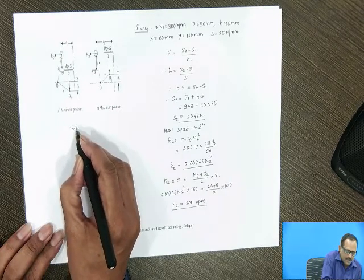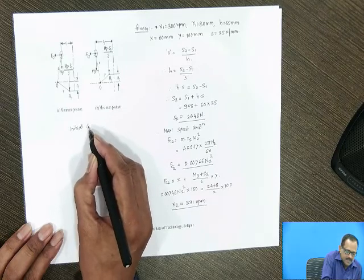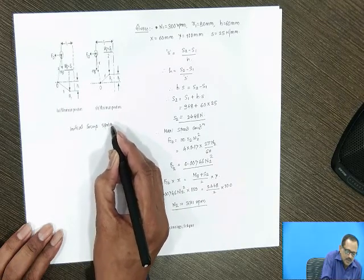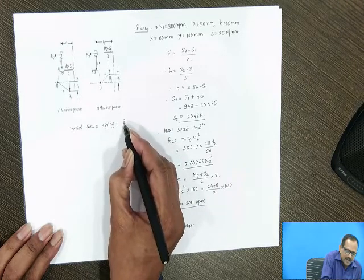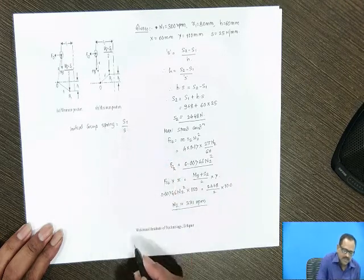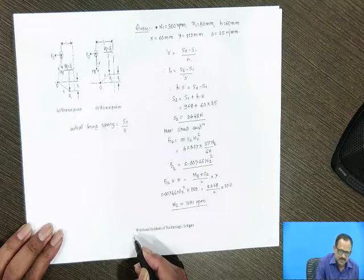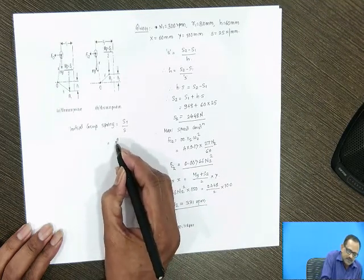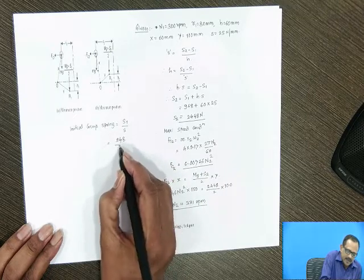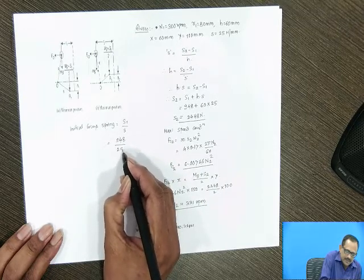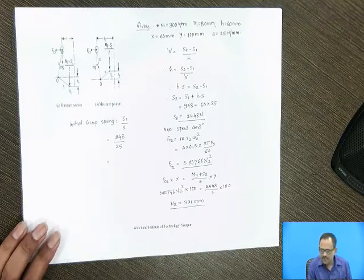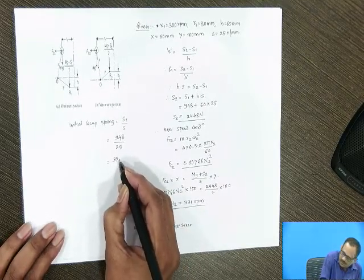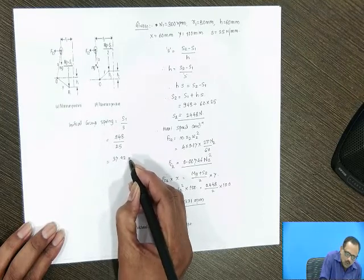Initial compression of the spring is S1, the spring force at minimum speed condition, divided by stiffness of the spring. The value of S1 is 948 divided by stiffness 25, therefore initial compression of the spring is 37.92 mm.